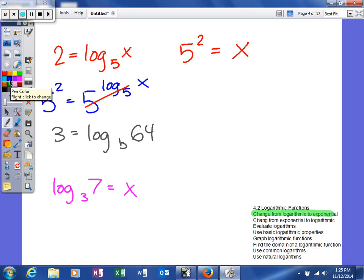It says 3 is equal to the log base b of 64. The base of our logarithm is b, so we're going to exponentiate with the base of b. That means we make the 3 an exponent of b, and we make the log base b of 64 also an exponent of b. On the right side of our equation, these two things will cancel and leave me 64 is equal to b to the third power.